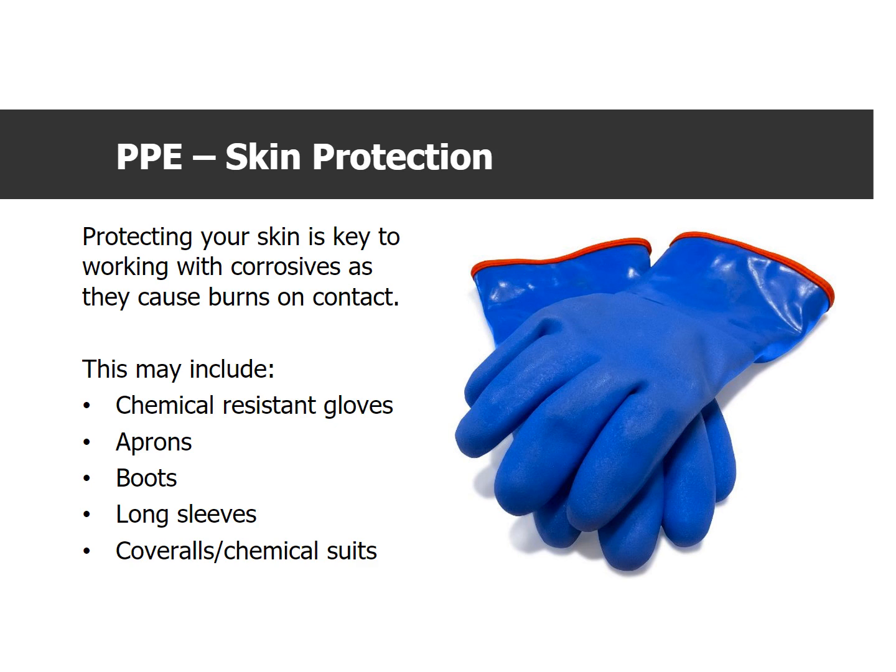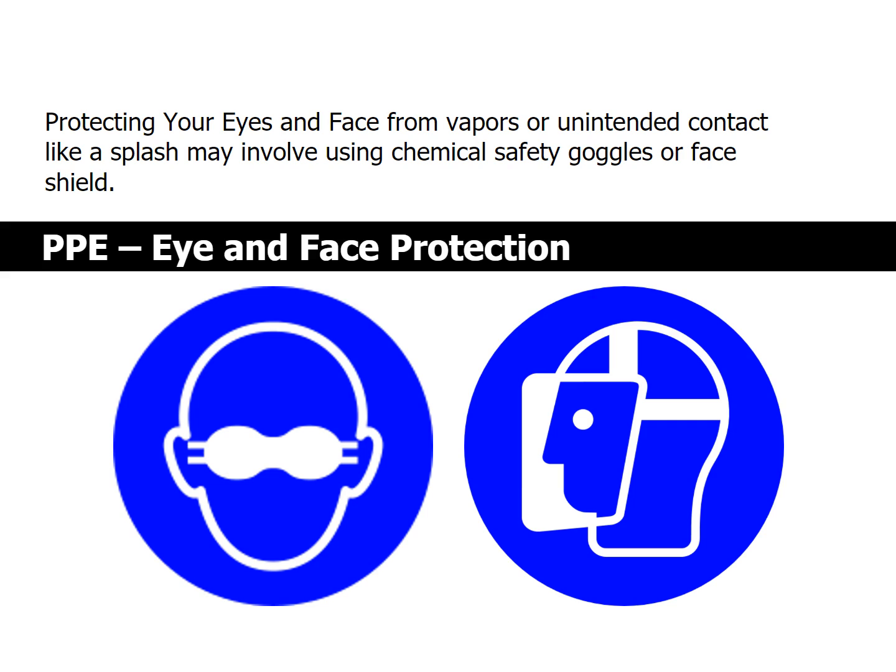Protecting your skin is key to working with corrosives as they cause burns on contact. This may include chemical resistant gloves, aprons, boots, long sleeves, coveralls, or chemical suits. Protecting your eyes and face from vapors or unintended contact like a splash may involve using chemical safety goggles or a face shield.